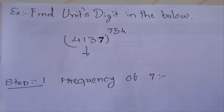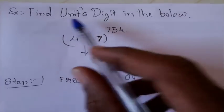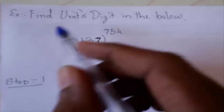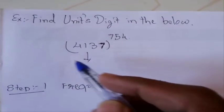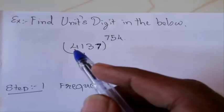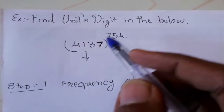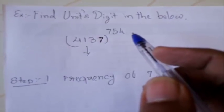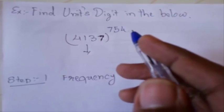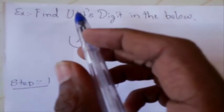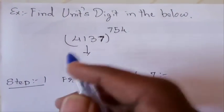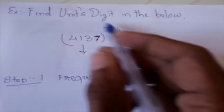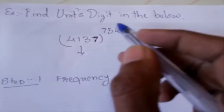Hello friends, today we are going to learn how to find the units digit in an exponential form. This number seems to be very large and you want to find out what's the answer of 4137 to the power of 754. It would be very difficult to find out the answer, but here we do not need to find out the whole answer — we only need to find out what will be the units digit in that answer.